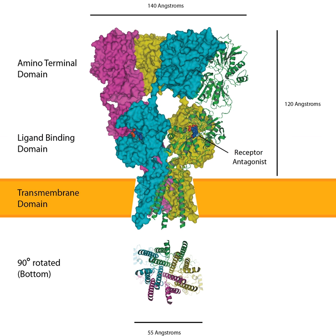Dimerization starts in the endoplasmic reticulum with the interaction of N-terminal LIVBP domains, then zips up through the ligand binding domain into the transmembrane ion pore. The conformation of the subunit protein in the plasma membrane caused controversy for some time. While the amino acid sequence of the subunit indicated four transmembrane domains, proteins interacting with the subunit indicated that the N-terminus seemed to be extracellular, while the C-terminus seemed to be intracellular.